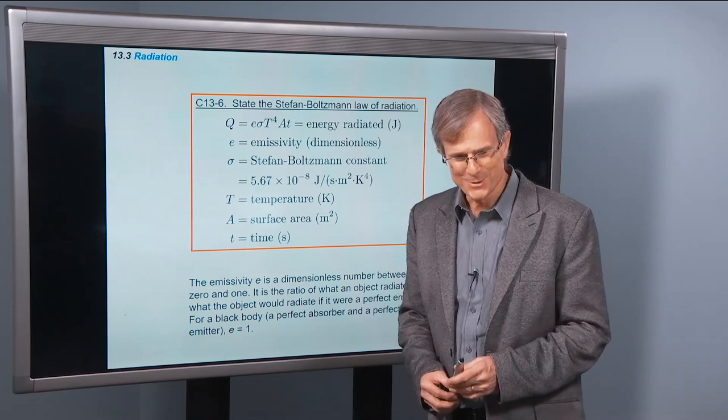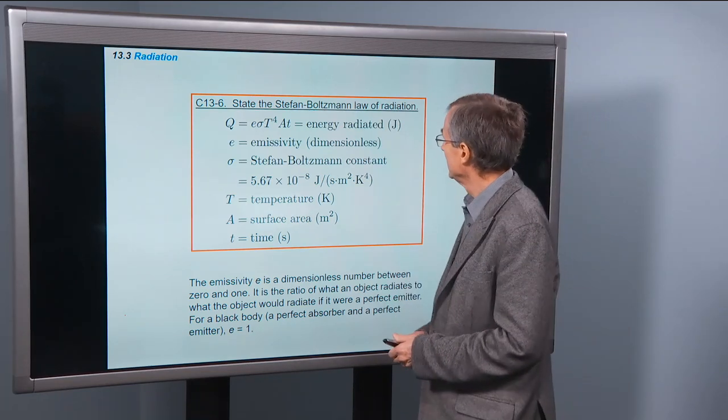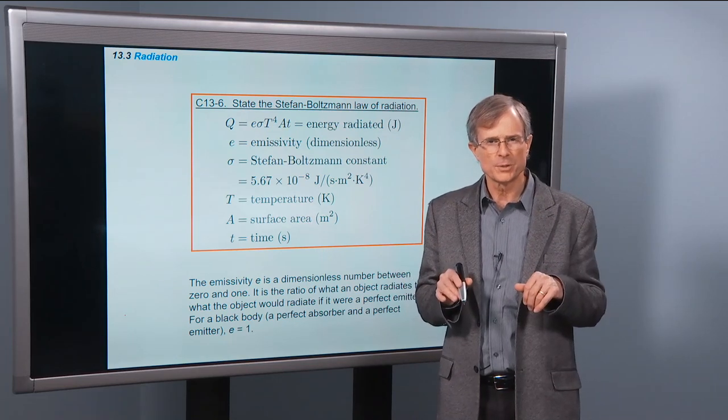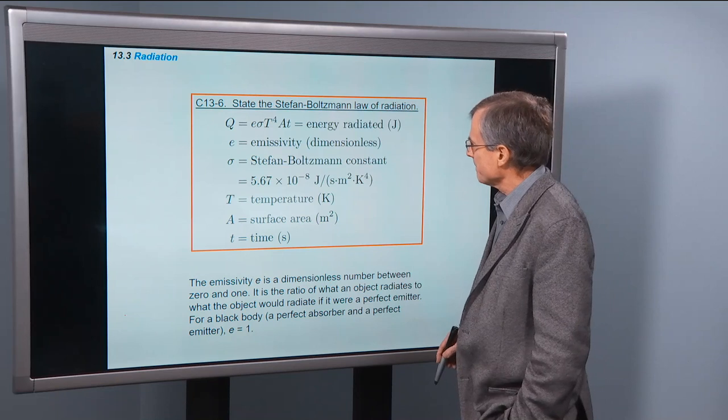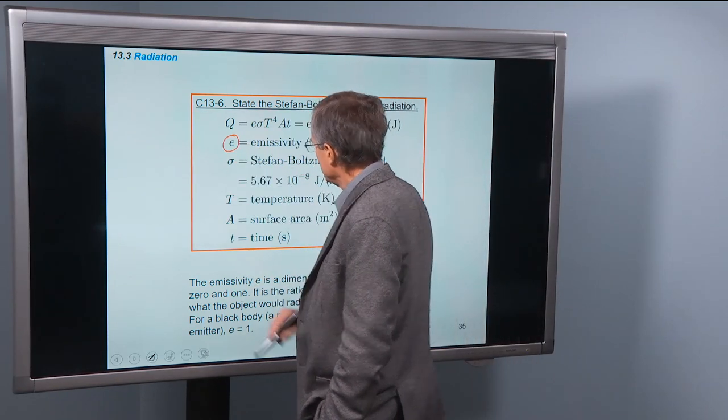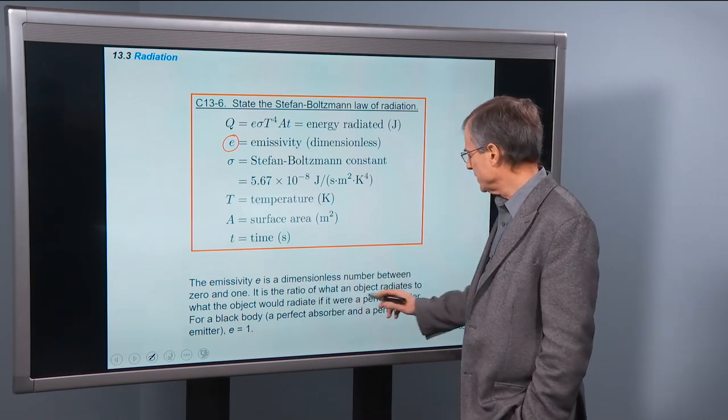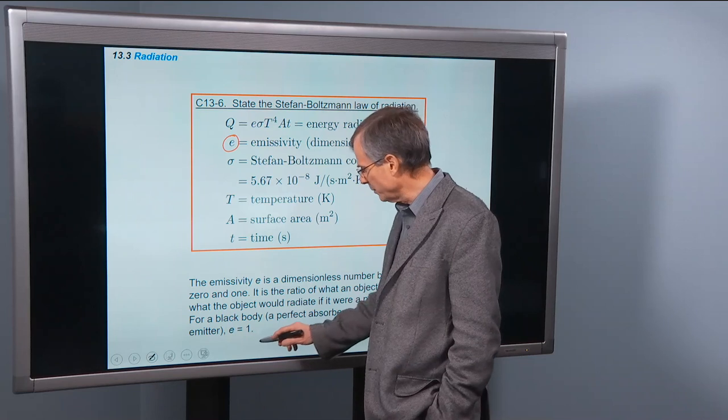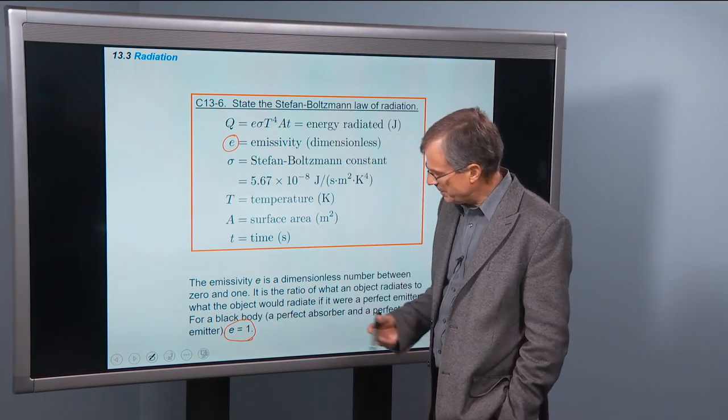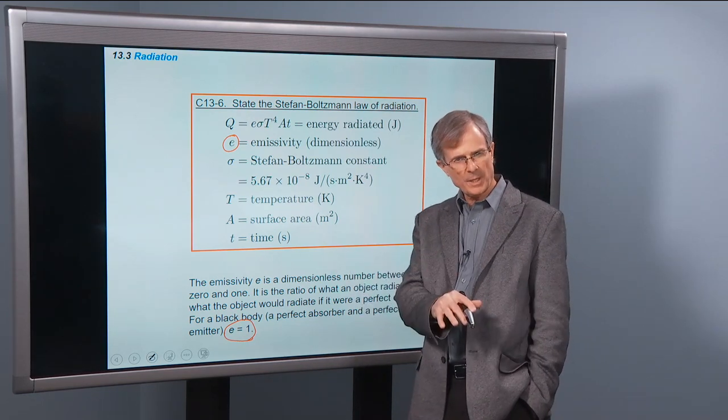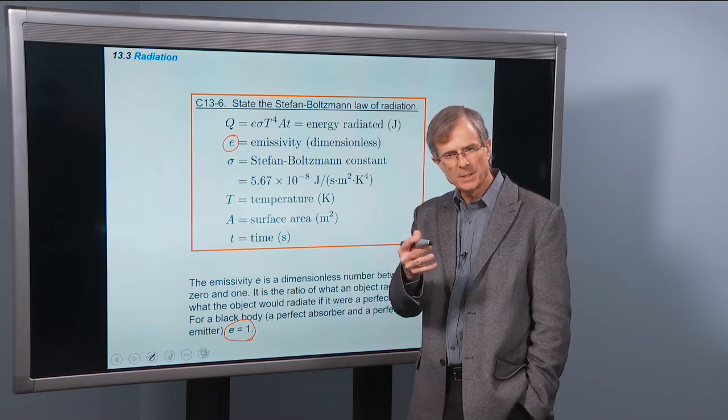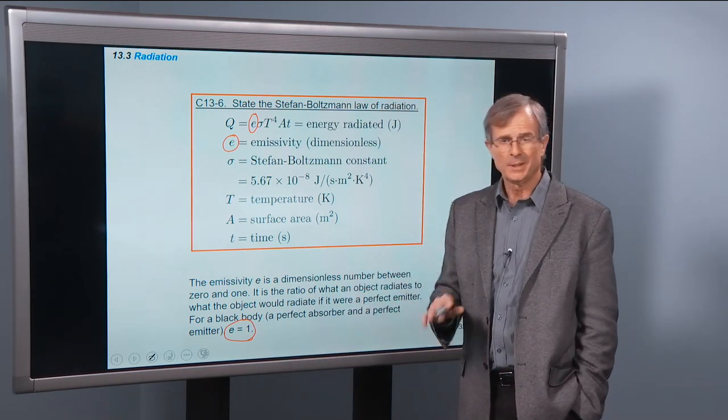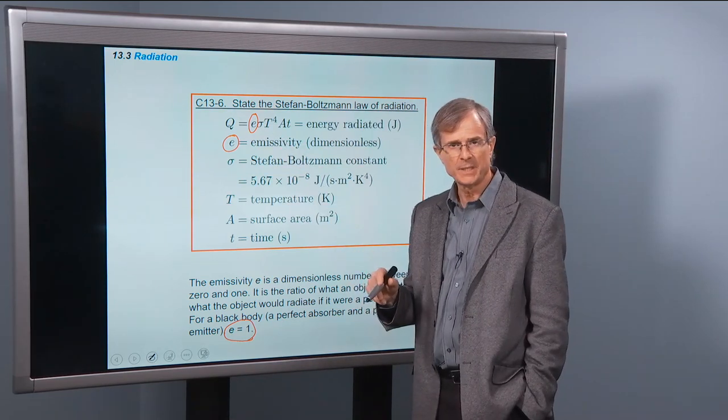You want equations, you get equations. The Stefan-Boltzmann law of radiation. This law governs how much heat is given off by a body at a certain temperature. This emissivity is a dimensionless number between zero and one. It's the ratio of what an object radiates to what the object would radiate if it were a perfect emitter. For a black body, a perfect absorber and perfect emitter, this emissivity is one. A highly reflective object, like a mirror, like a silver car or white car, would have a much lower emissivity.